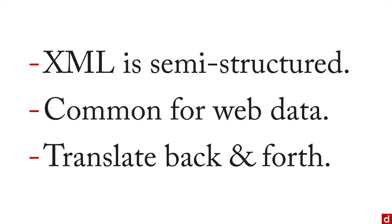In sum, here's what we can say. Number one, XML is semi-structured data — it has tags to tell the computer what the piece of information is, but you can make the tags whatever you want. XML is very common for web data, and it's really easy to translate between formats — XML, HTML, CSV, and so on — back and forth, which gives you a lot of flexibility in manipulating data so you can get into the format you need for your own analysis.